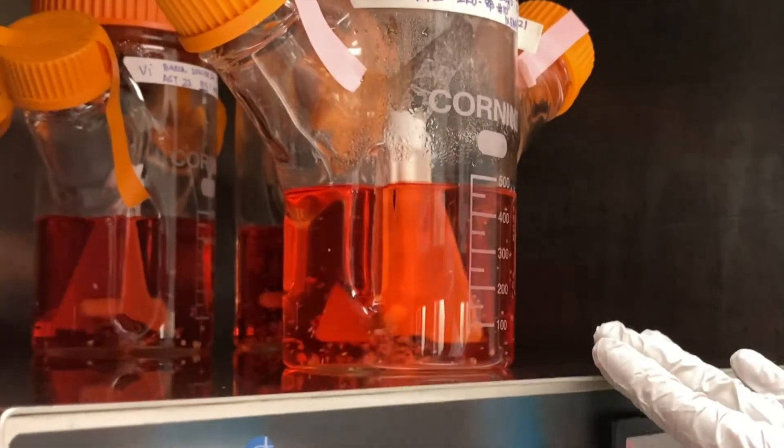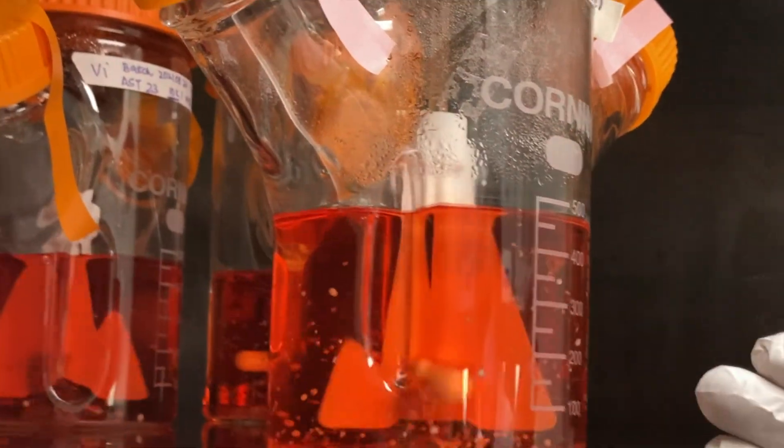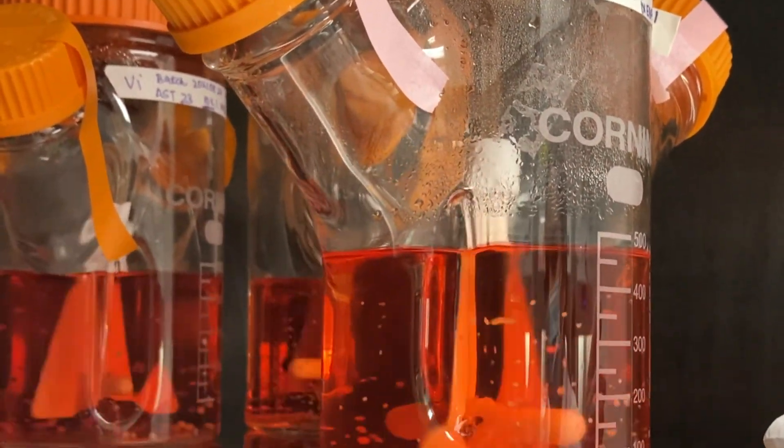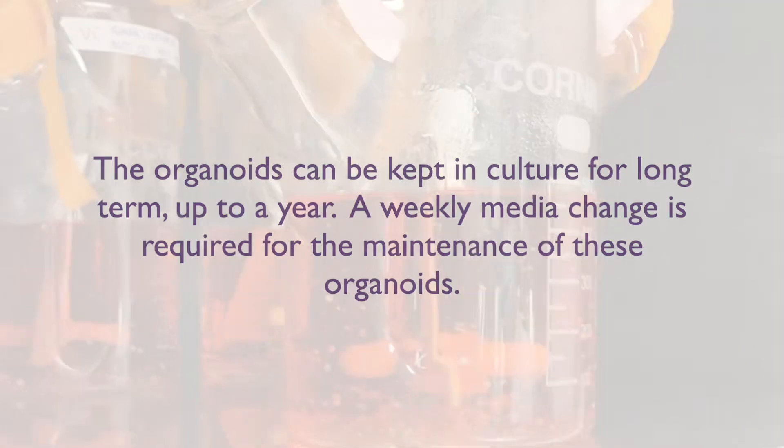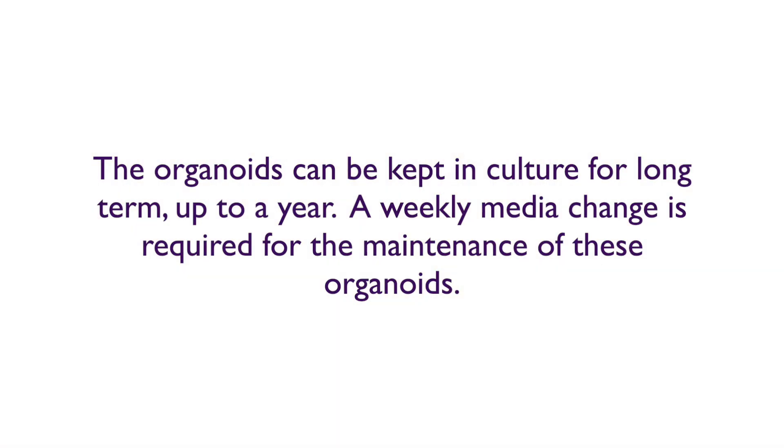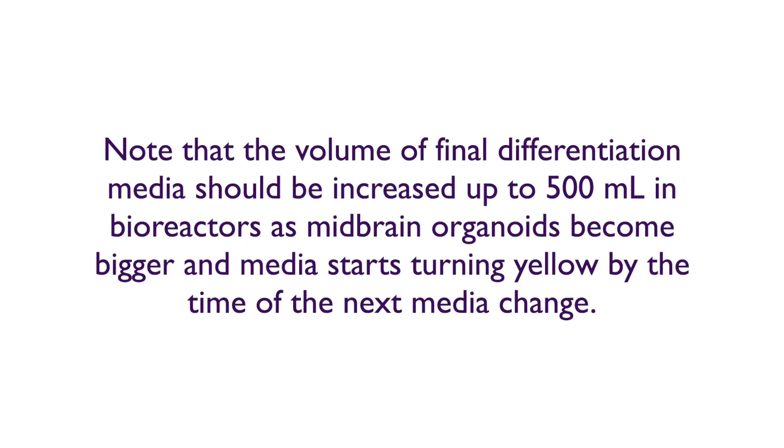At this stage, the midbrain organoids can be observed floating in the final differentiation media. The organoids can be kept in culture for long term, up to a year. A weekly media change is required for maintenance of these organoids. Note that the volume of final differentiation media should be increased up to 500 mL in bioreactors, as midbrain organoids become bigger and media starts turning yellow by the time of the next media change.